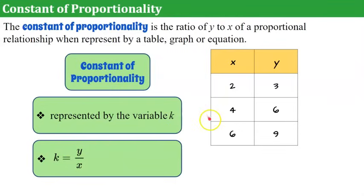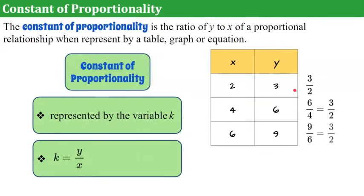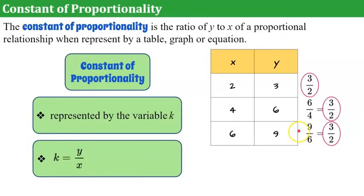Given a table of values that represents a proportional relationship, any ratio y to x is going to be the same. We can also use this to prove that a table of values is proportional or not proportional. If every ratio y to x is equivalent, then you have a proportional relationship. If those ratios simplify to different values, you do not have a proportional relationship. So here the constant of proportionality k is 3/2.